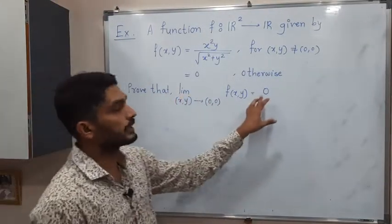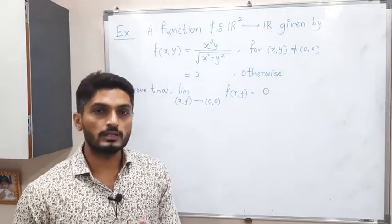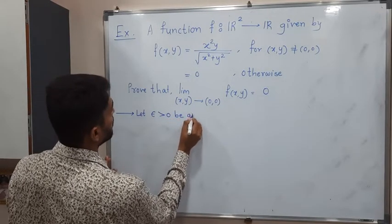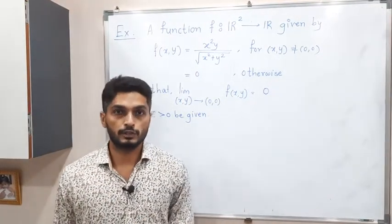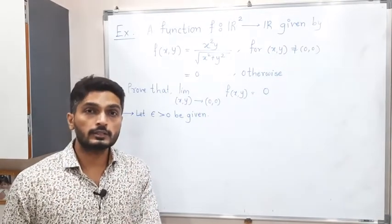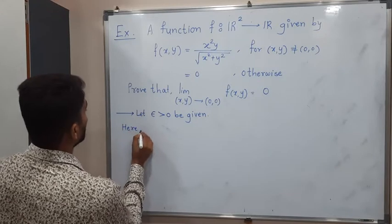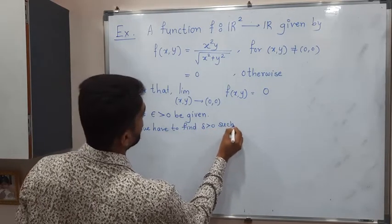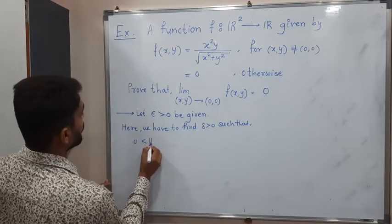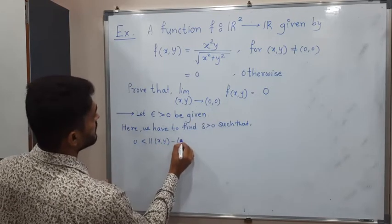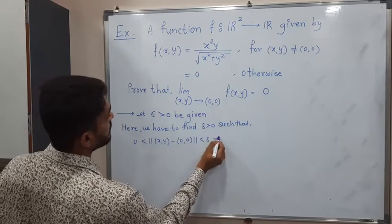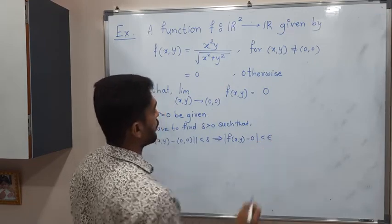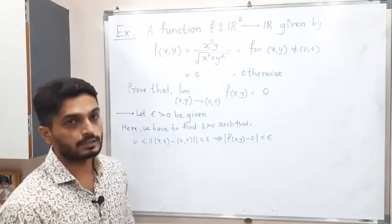When we have to prove the limit of any function equals L, we take epsilon first. So I will do the same thing — let epsilon greater than zero be given. With the help of the epsilon-delta definition I am going to prove it. Our task is to find delta greater than zero such that: zero less than norm of (x,y) minus (0,0) less than delta implies |f(x,y) - 0| less than epsilon.